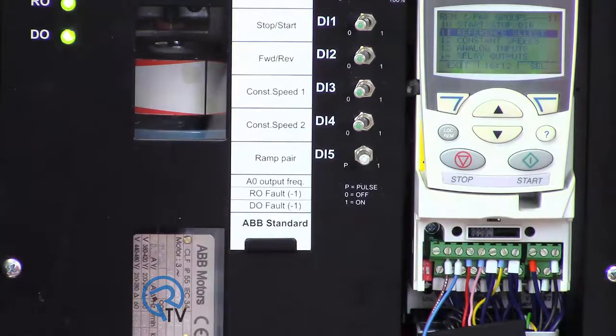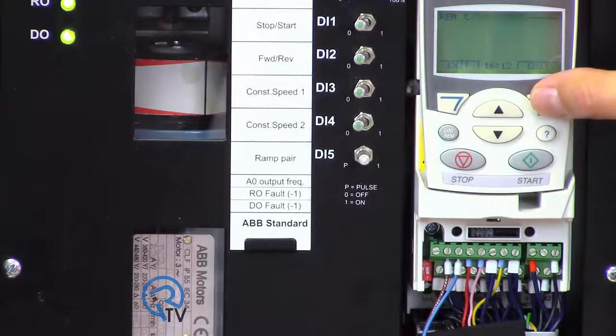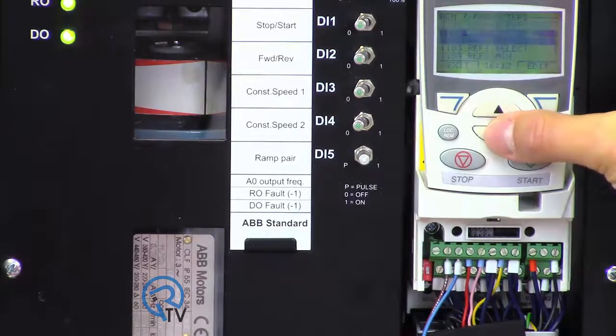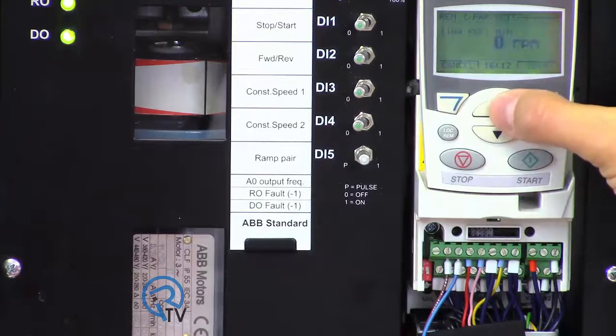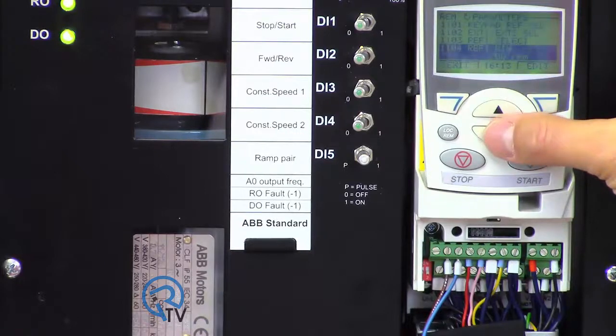To adjust the speed reference based on these limits, use the keypad to navigate to reference select group 11. Parameter 1104 changes to 200 RPMs. Parameter 1105 changes to 1400.